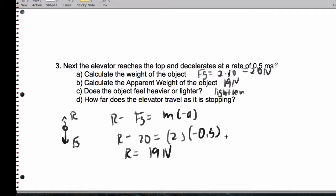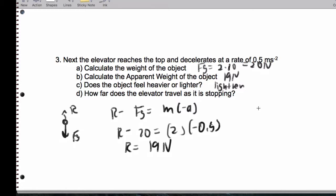How far does the elevator travel as it's stopping? So we don't have a time. For part D, we can use V squared is U squared plus 2AS. V squared is 0 because it stops, equals the 0.75 squared from the previous part plus 2 times negative 0.5 times S. So we end up getting about 0.56 meters.